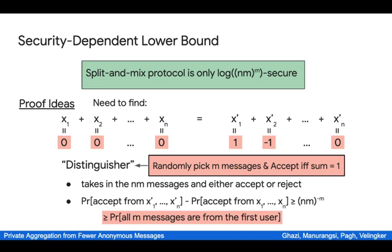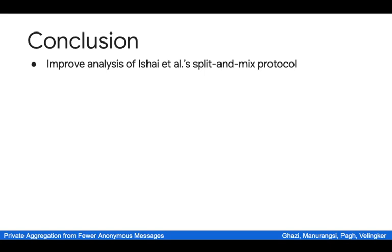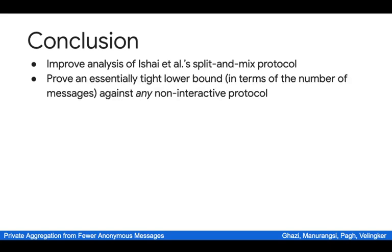The difference in acceptance probability is at least the probability that all chosen messages are from the first user, which is at least 1 over n times m to the m. This completes the proof of the security-dependent lower bound for the split-and-mix protocol. For the general protocol, the main idea is similar: the distinguisher picks a few messages and accepts if they satisfy a certain predicate depending on the protocol specifics. In conclusion, we give an improved analysis of Ishai et al.'s split-and-mix protocol and prove an essentially tight lower bound that holds against any non-interactive protocol in the anonymous model.